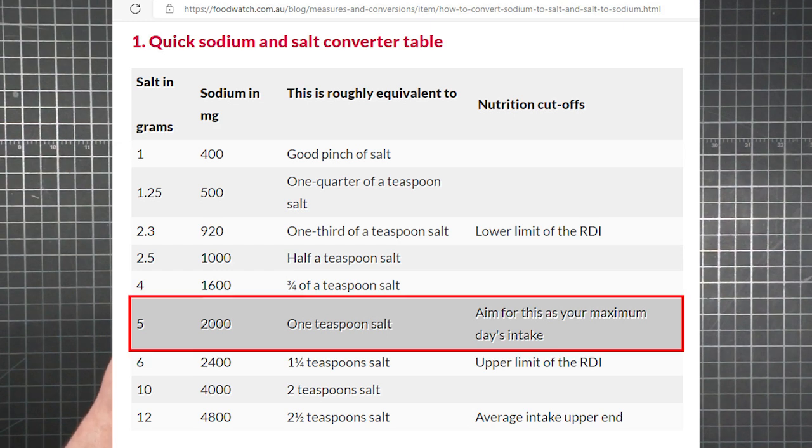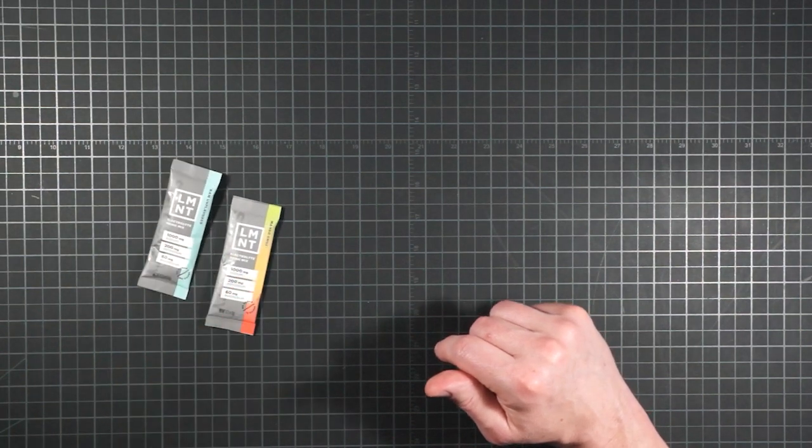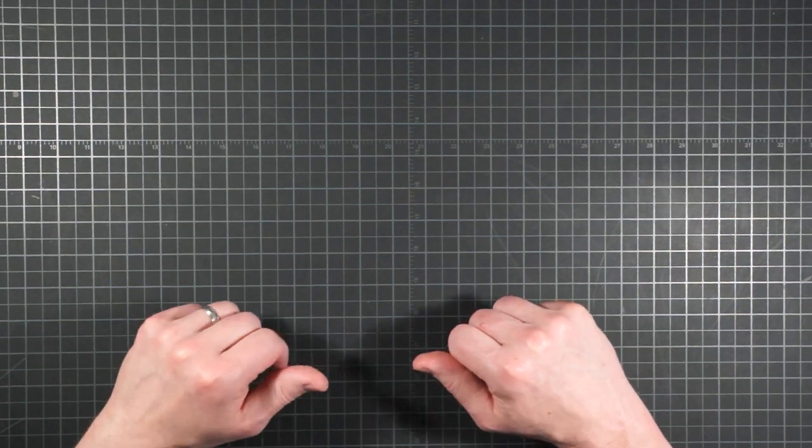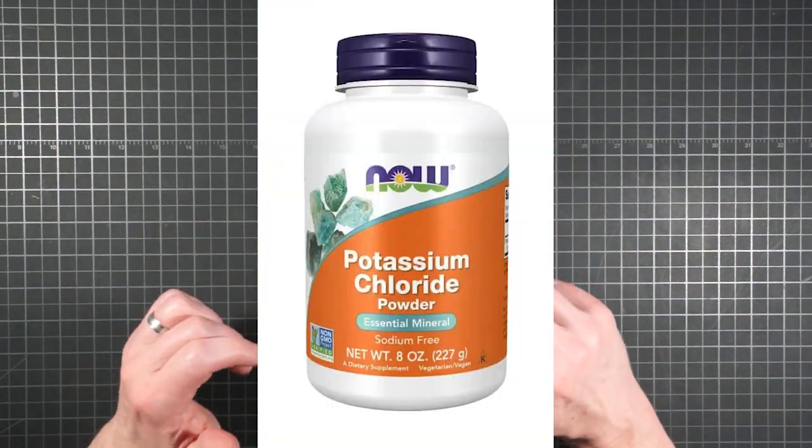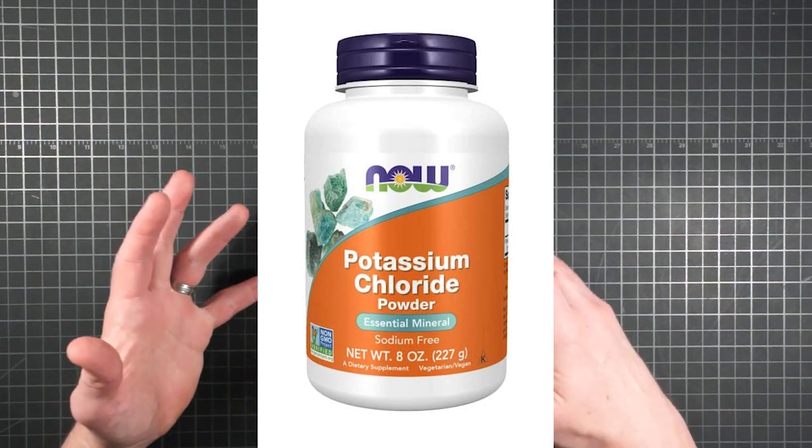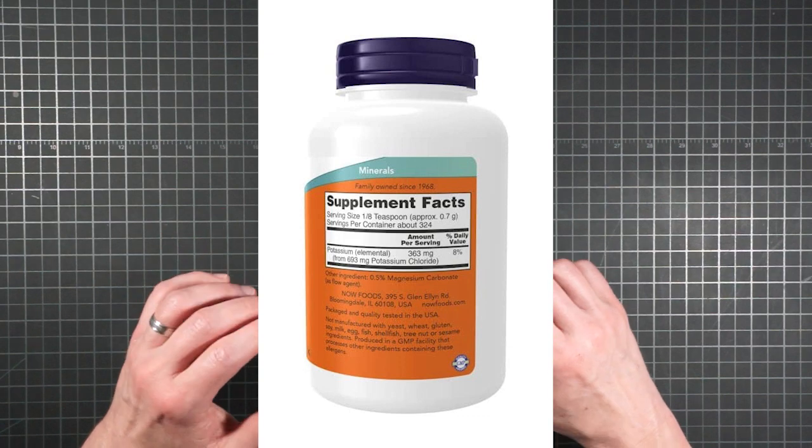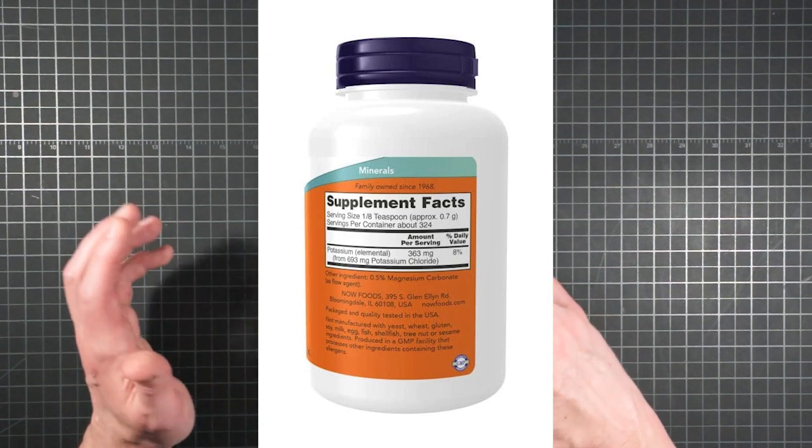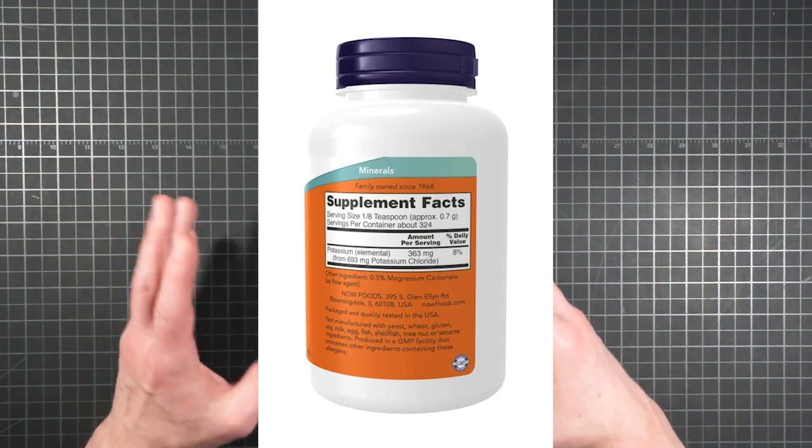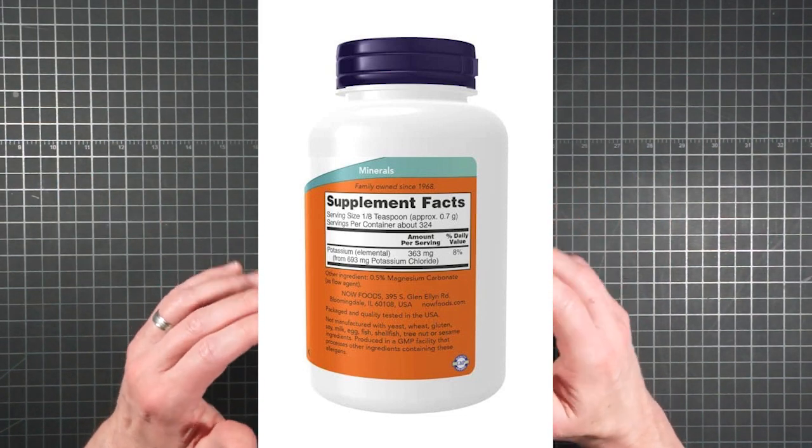For the potassium side, you can buy potassium chloride powder from the places where you'd get other mineral supplements. It's about 52% potassium by weight, or half if we're being easy about it, so add twice as many milligrams of the powder as you want in milligrams of pure potassium.